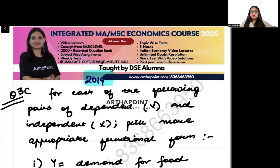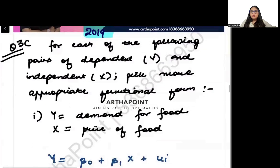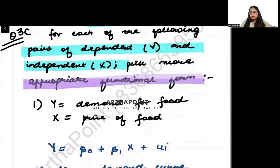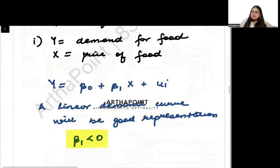Question number 3c: Try to look into the question. For each of the following pairs of dependent and independent variables, pick the more appropriate functional form. Let's try to read the first one. It says that Y represents the demand for food and X represents price of food.